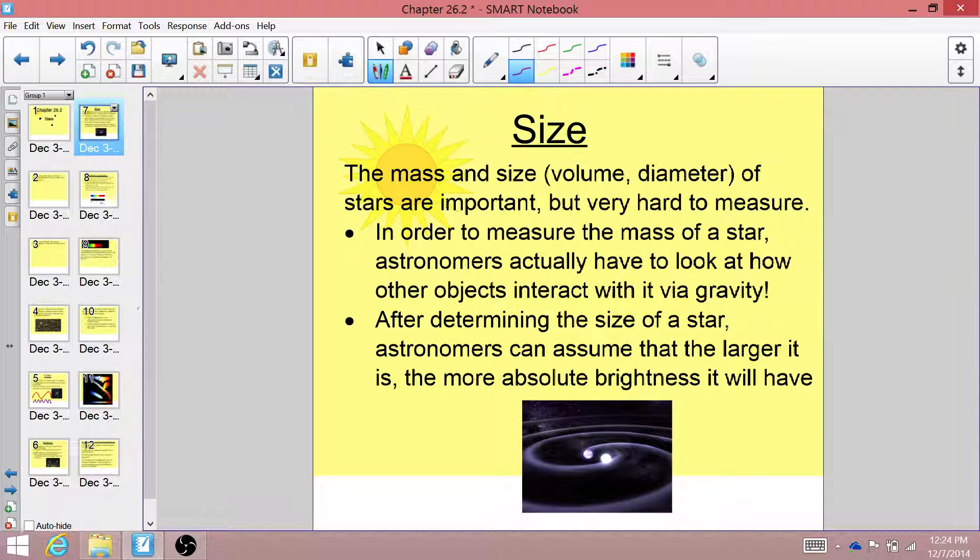Now if we think about two stars, and the closer star has the same apparent brightness as the one that's farther away, we can assume that the star farther away, because it appears to be the same brightness as the one that's closer, has to be larger. It just has to be. And it has to have a larger absolute brightness than the one that's closer to us.